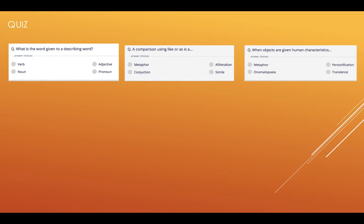Number three, when objects are given human characteristics, we call them, is it a metaphor, personification, onomatopoeia, or transience. So write the first letter of the word.